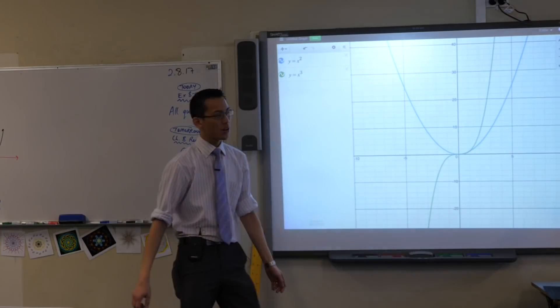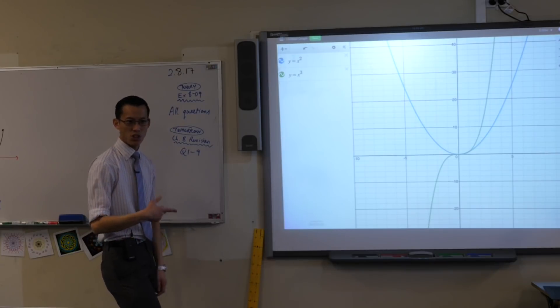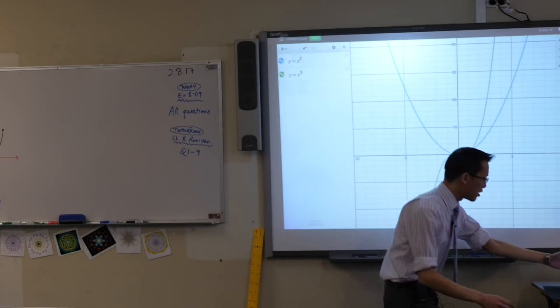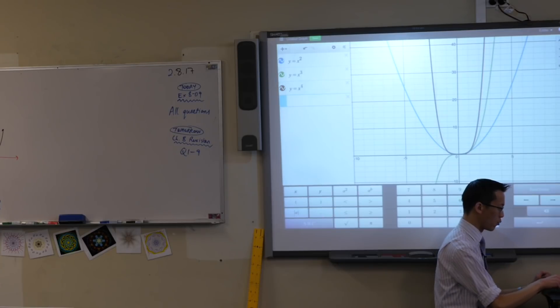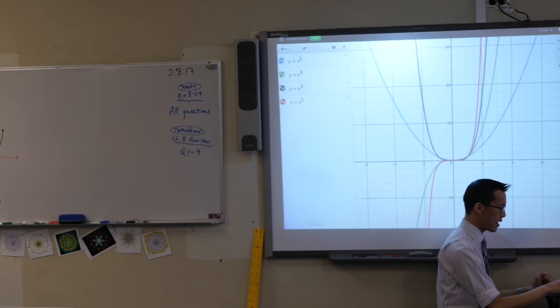Okay, so y equals x squared, y equals x cubed, we looked at these before. So now if I put on y equals x to the 4, and y equals x to the 5. Have a look at these things.